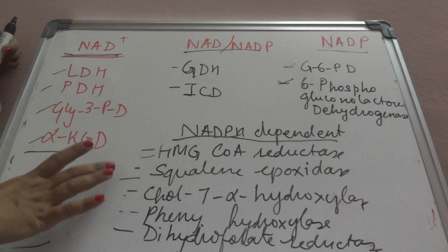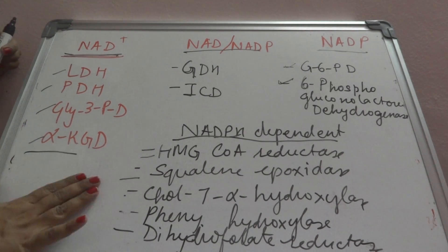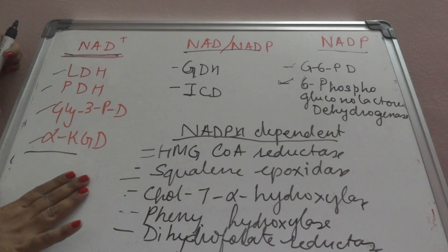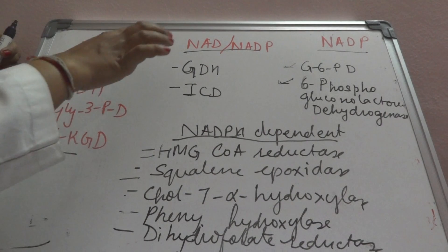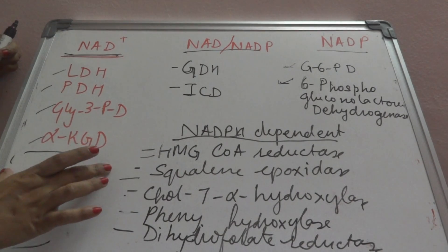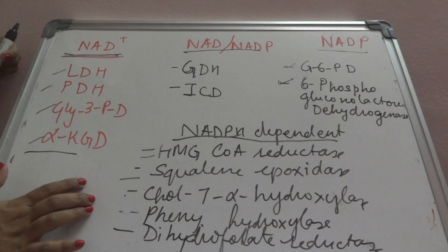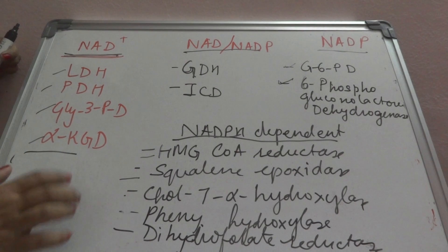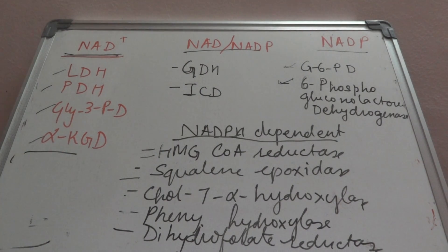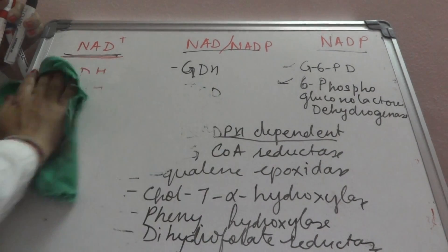These are the important functions of niacin. In niacin deficiency causing pellagra, there is deficiency of NAD — nicotinamide adenine dinucleotide — or NADP, because metabolism becomes difficult to progress. The manifestations are diarrhea, dementia, dermatitis, and finally death.